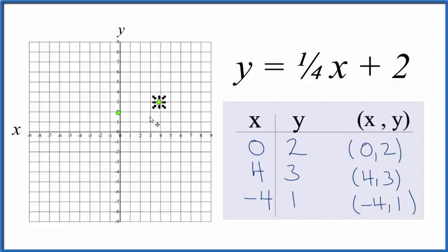And we could stop with two points, but if we use three, we made an error up here. We'll catch that. So x is negative four, and we go up one, y is one.